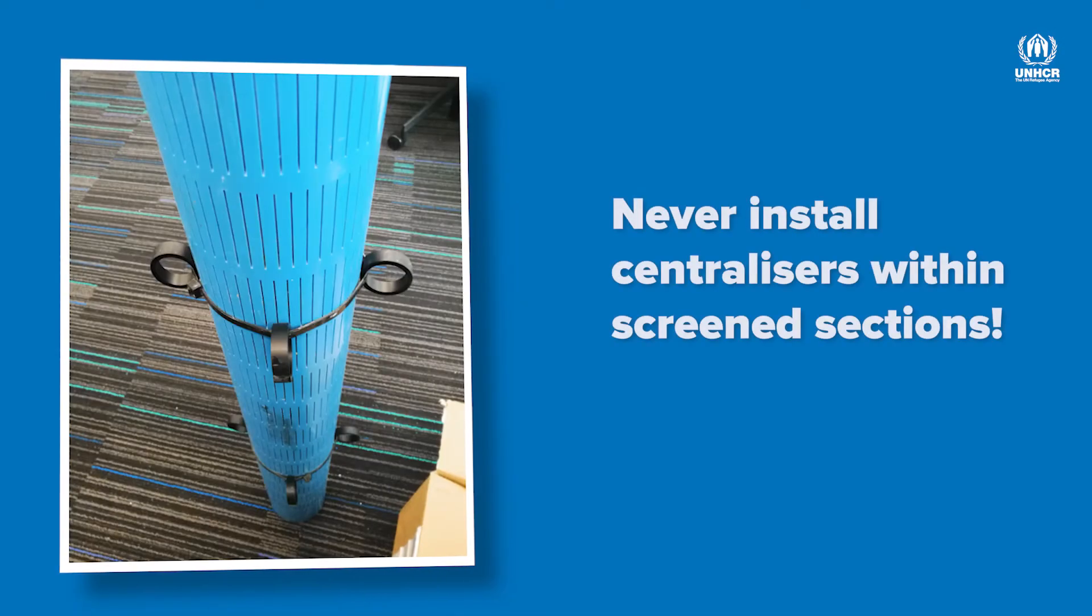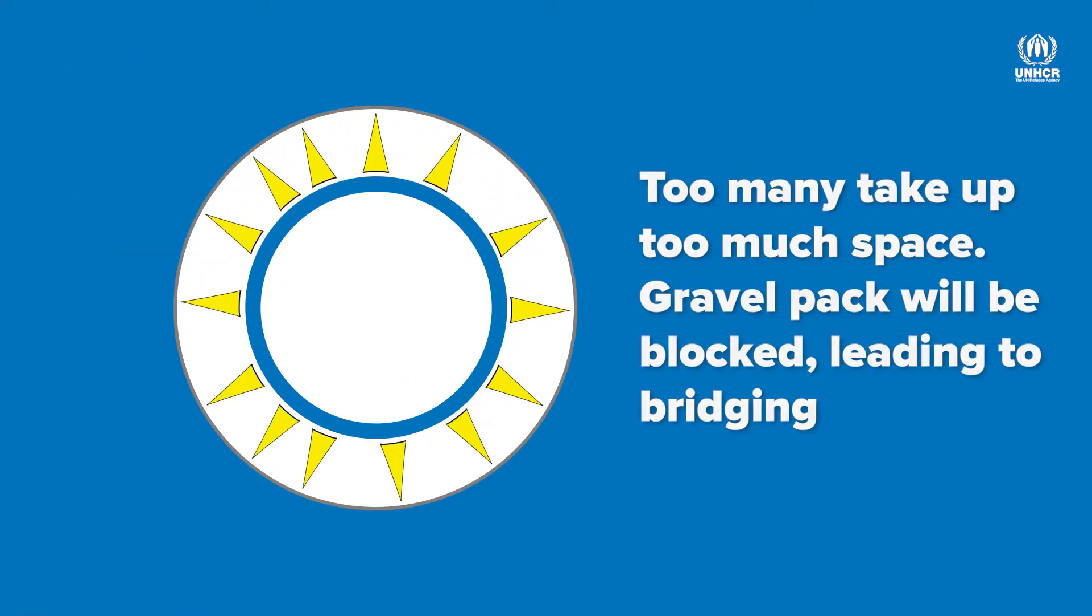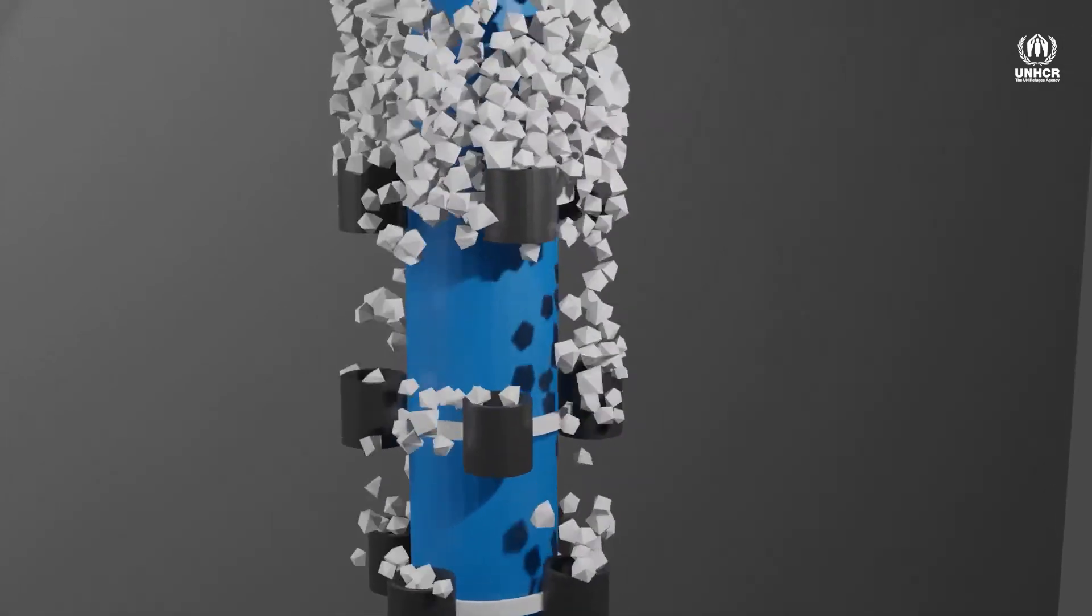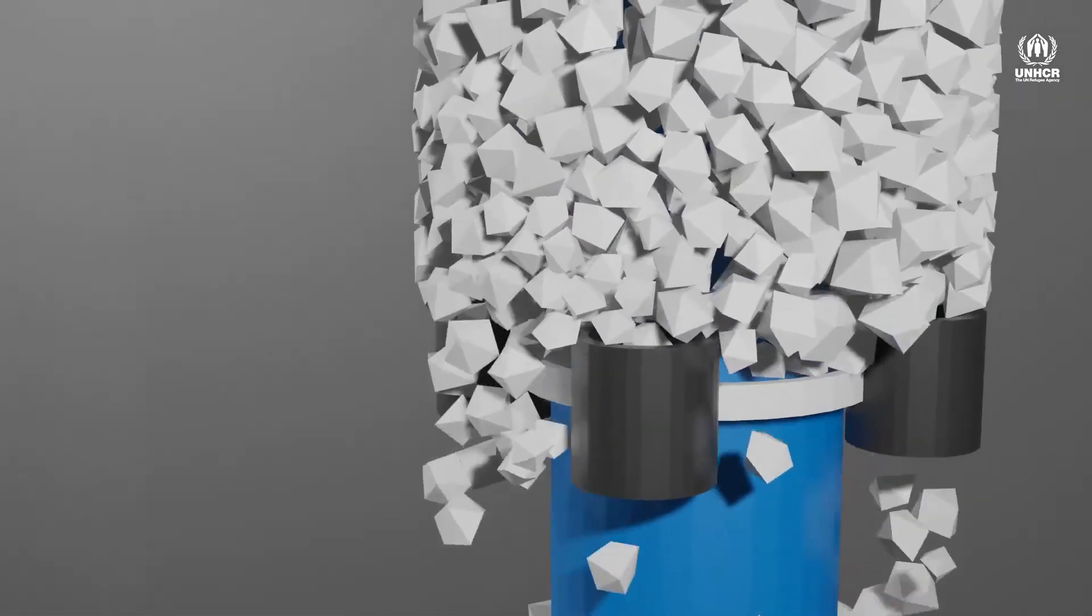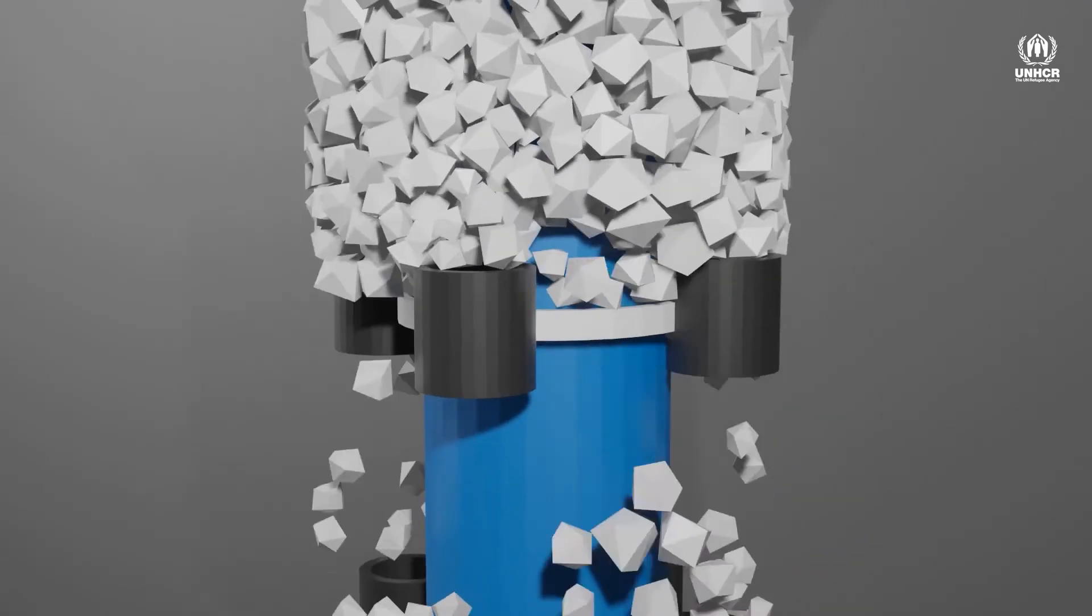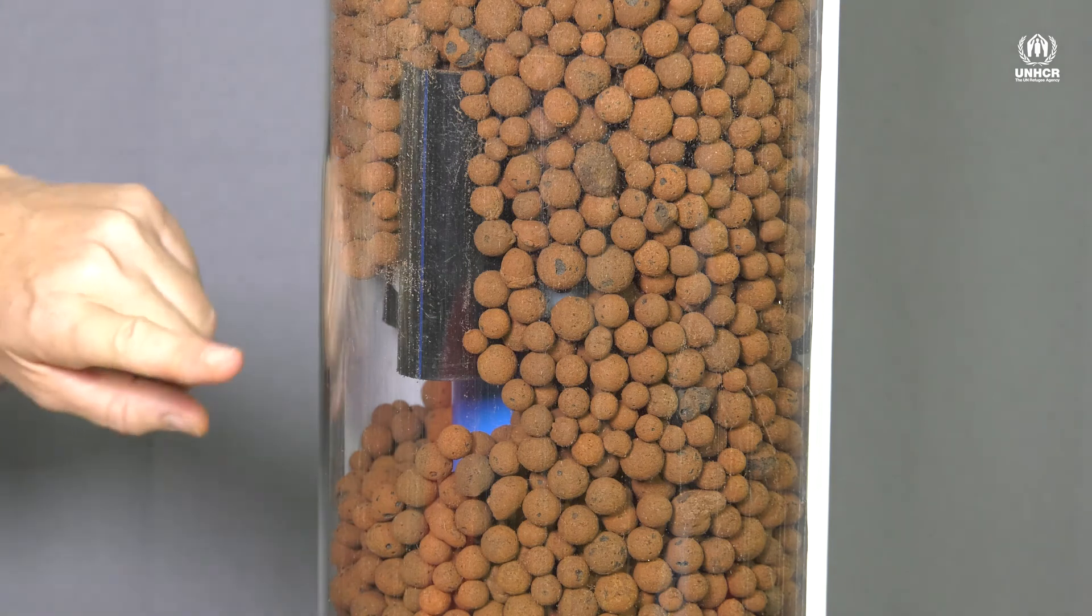Please make sure that they're not placed directly against the screen intake sections. The danger with putting too many centralisers on is that this will increase the chance of blocking gravel installation, leading to voids in the gravel pack, which is called bridging. For the same reason, they must not be too large or cover too much area.